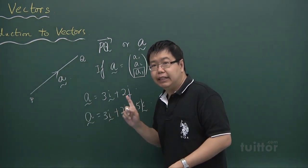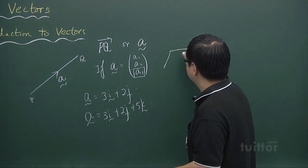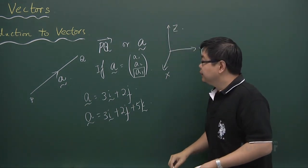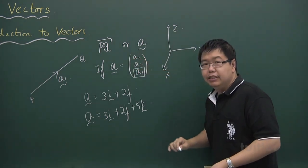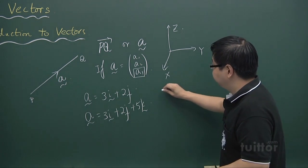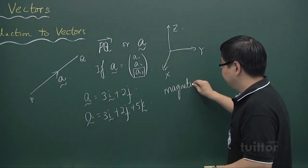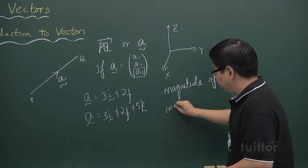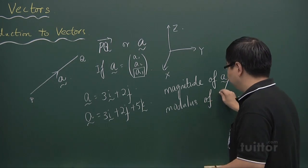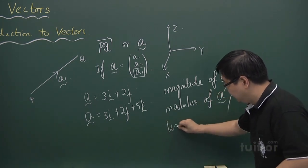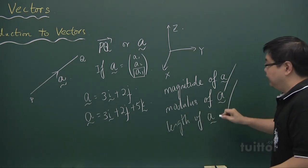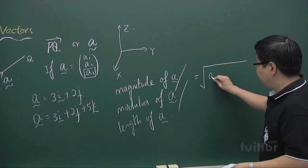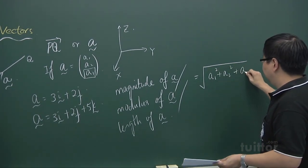The z-axis is an axis perpendicular to the x-y plane. So if A is represented by components A1, A2, A3, the magnitude of vector A — also called the modulus or length of vector A — is given by the positive square root of A1 squared plus A2 squared plus A3 squared.